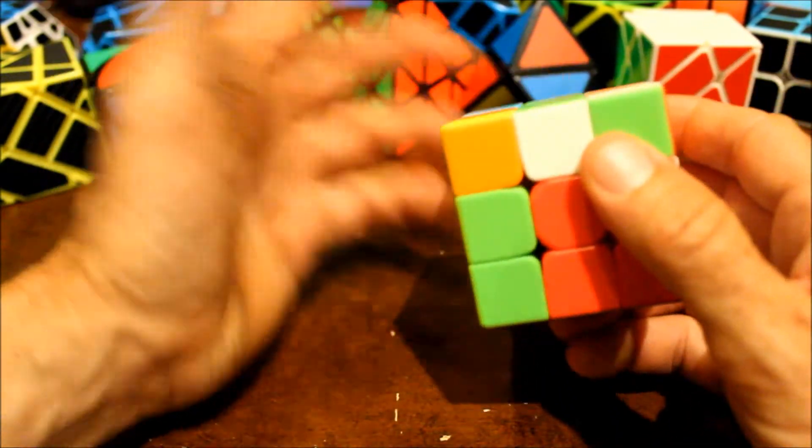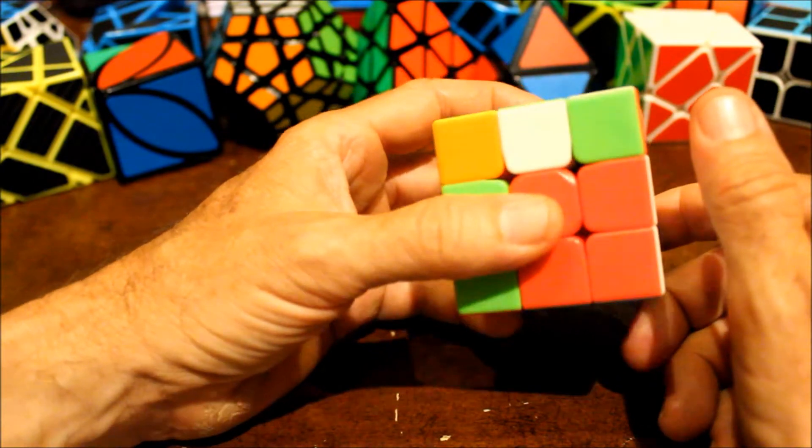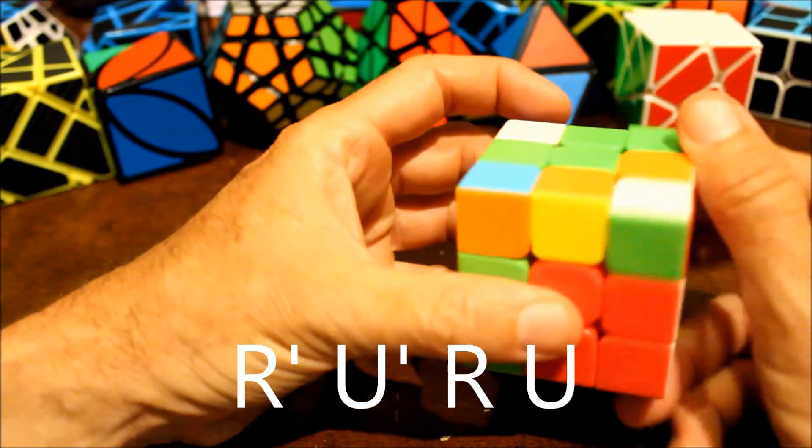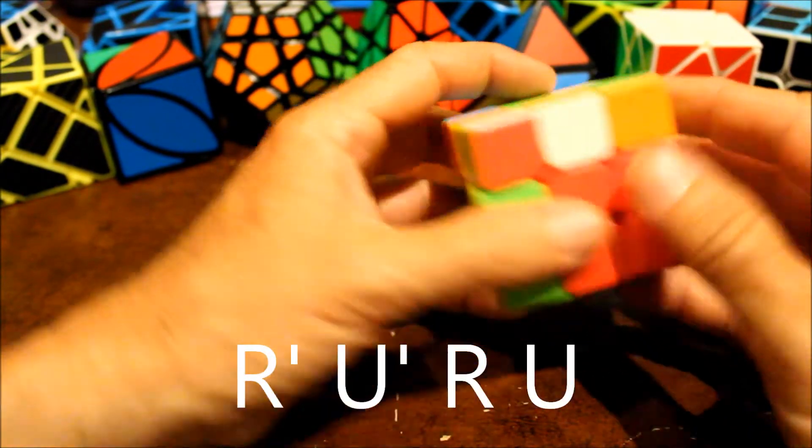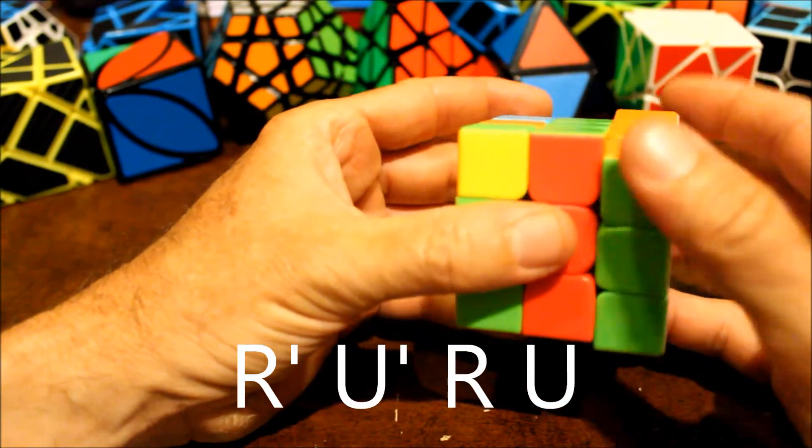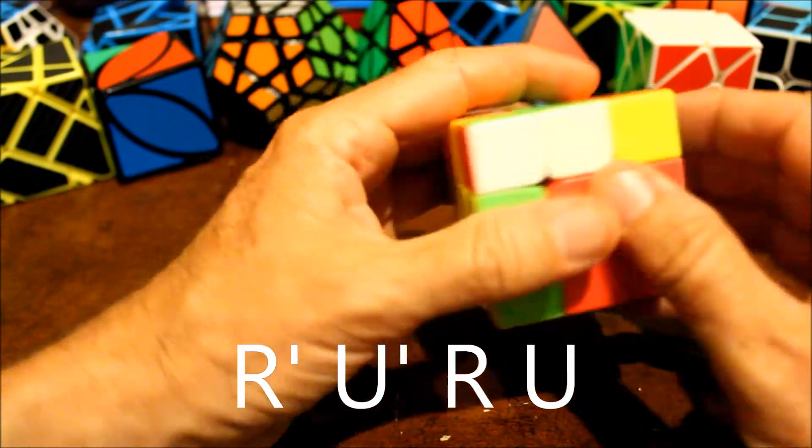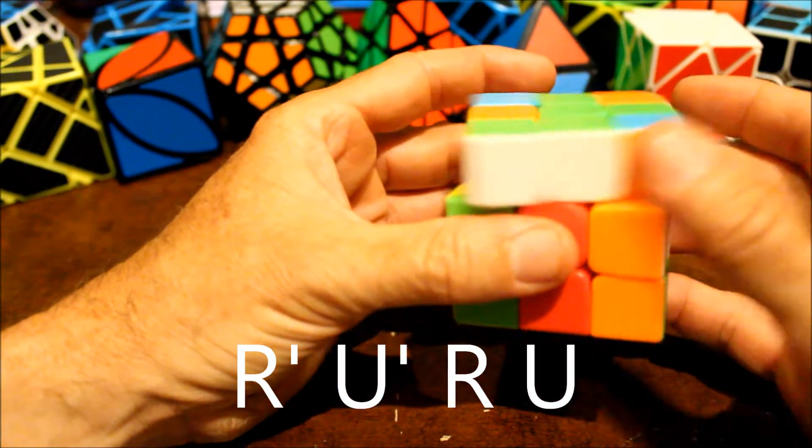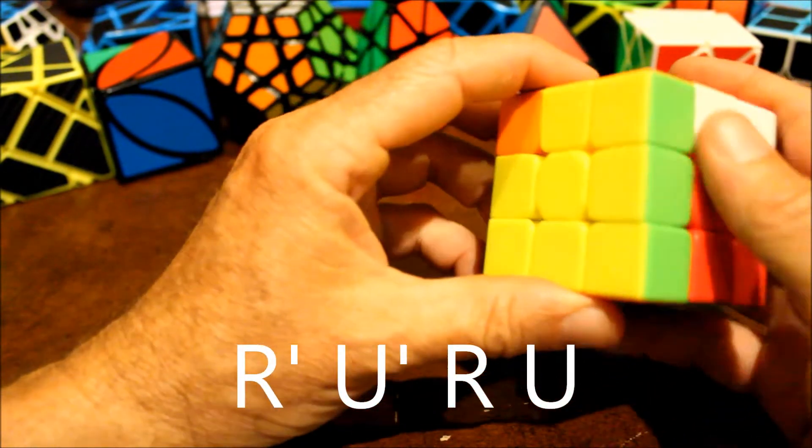Then you just do that same algorithm again. Right prime, upper prime, right, up. Is it right? No. Do it again. Right prime, upper prime, right, up. Still wrong. Right prime, upper prime, right, up. Still wrong. Right prime, upper prime, right, up. It's right.